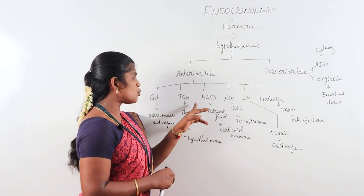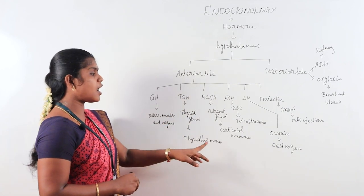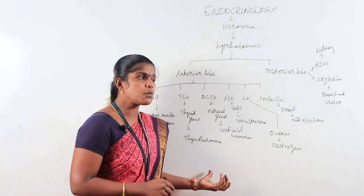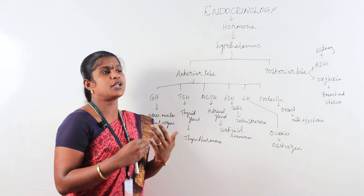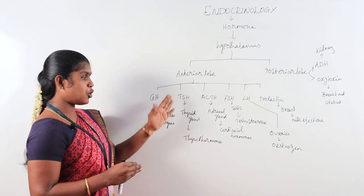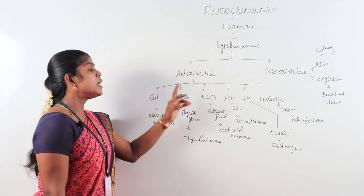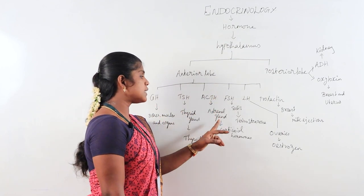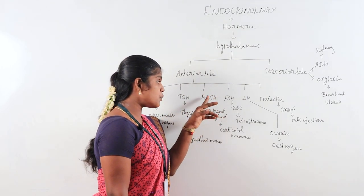The thyroid hormone is very specific for iodine metabolism and calcium metabolism. It acts on T3 and T4 metabolism. ACTH acts on the adrenal gland, which is the adrenocorticotrophic hormone.